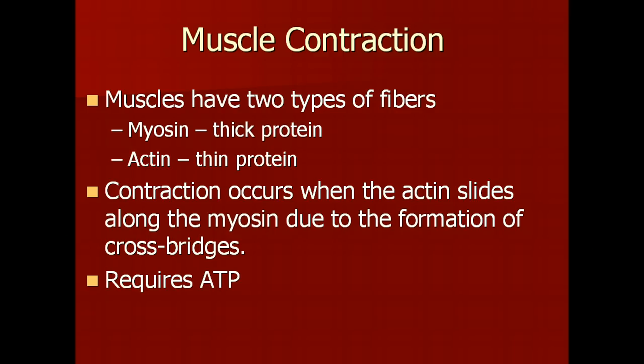The formation of these cross bridges requires ATP. So muscle contraction requires energy, usually in the form of glucose.